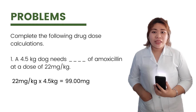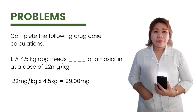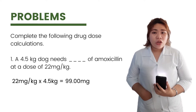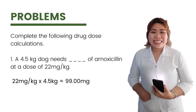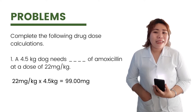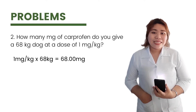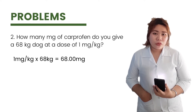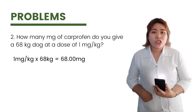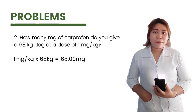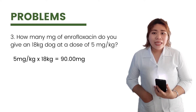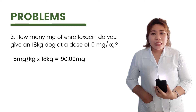First problem: a 4.5 kilogram dog needs how many milligrams of amoxicillin at a dose of 22 mg/kg? We multiply the patient's weight by the needed dose: 22 mg/kg × 4.5 kg = 99.00 mg. For the next problems, we apply the same procedure — multiply patient weight by dose. A 68 kg dog at 1 mg/kg carprofen gives 68.00 mg. An 18 kg dog at 5 mg/kg enrofloxacin gives 90.00 mg.